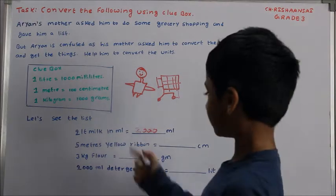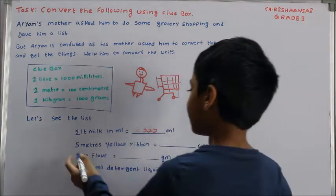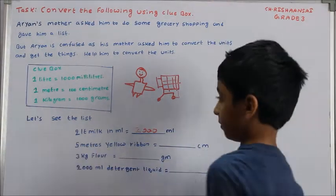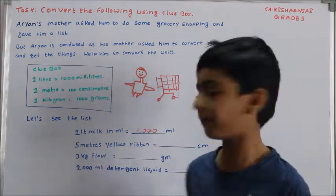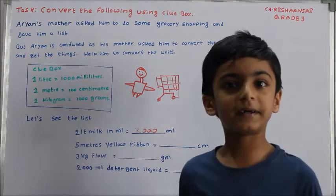2000 millilitres. 5 metres yellow ribbon. It will be 500 centimetres.